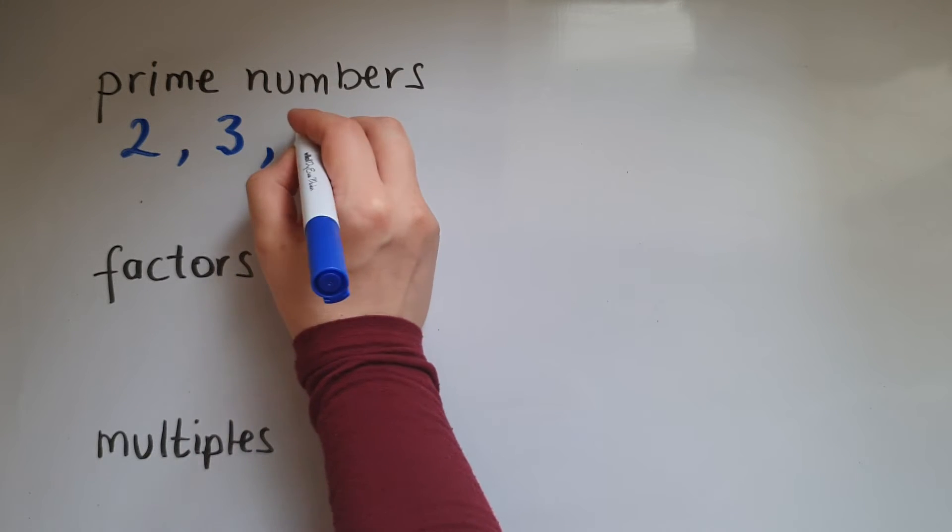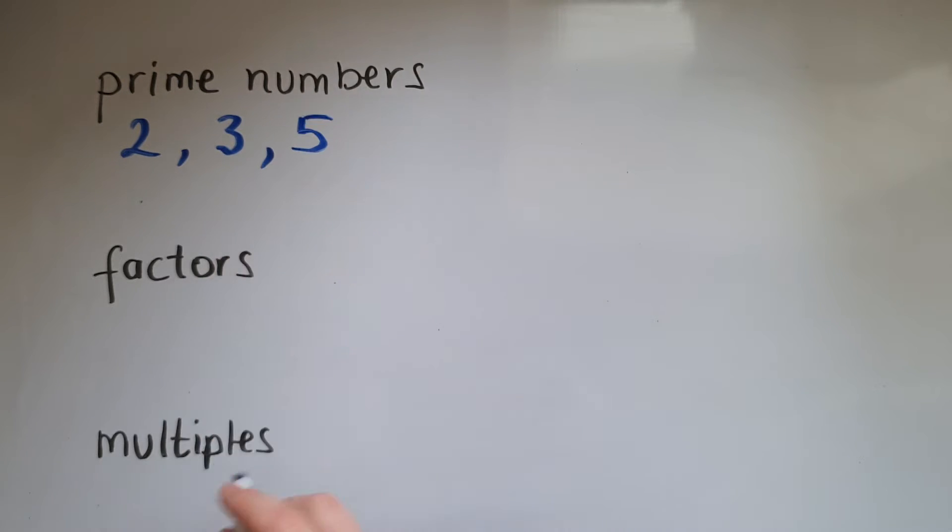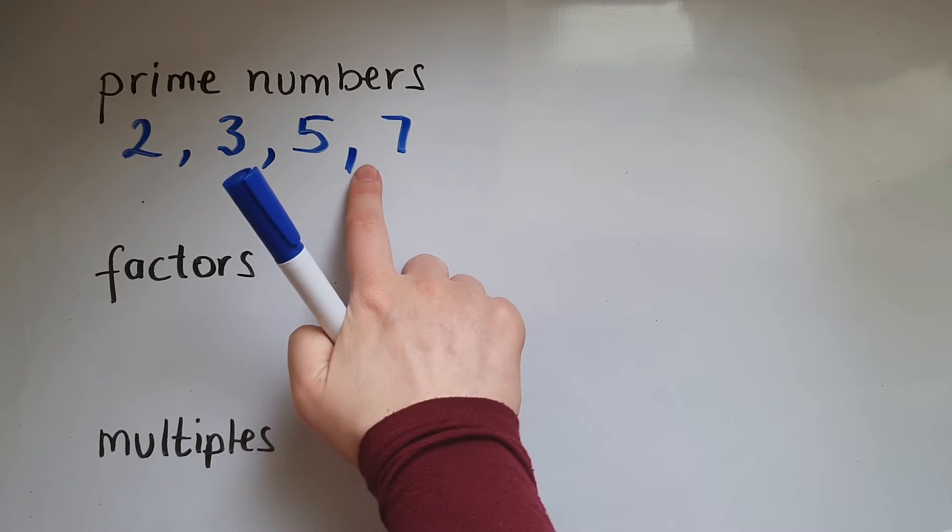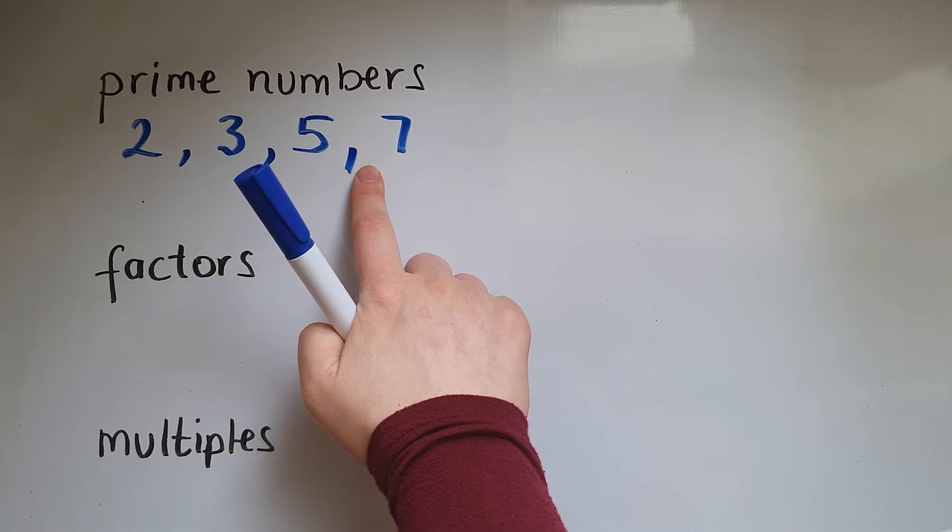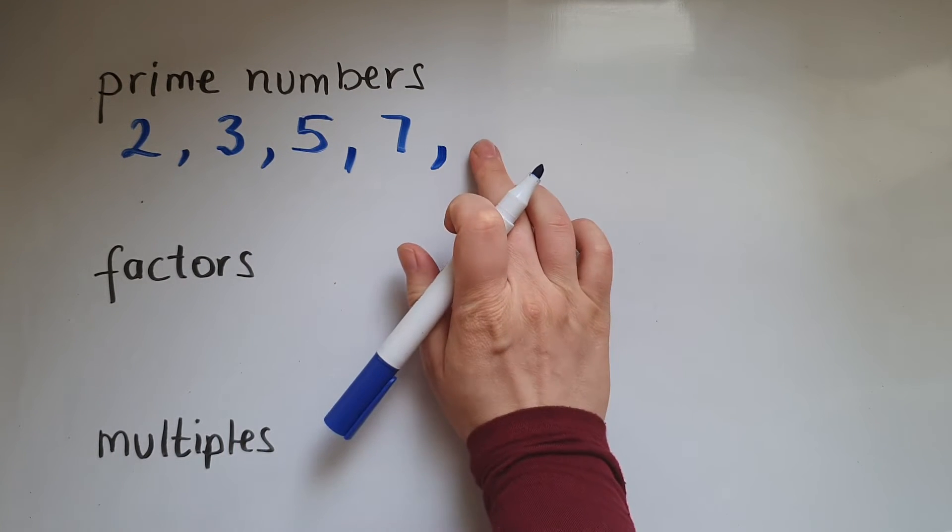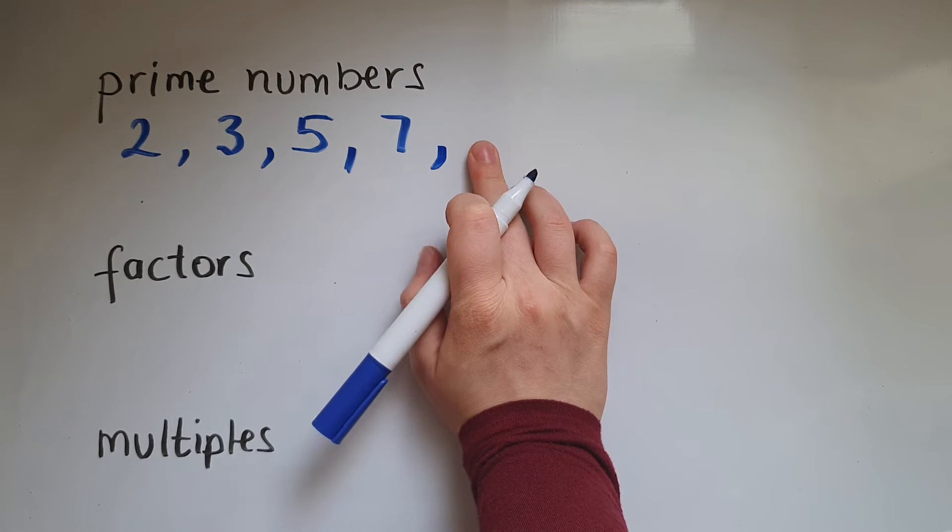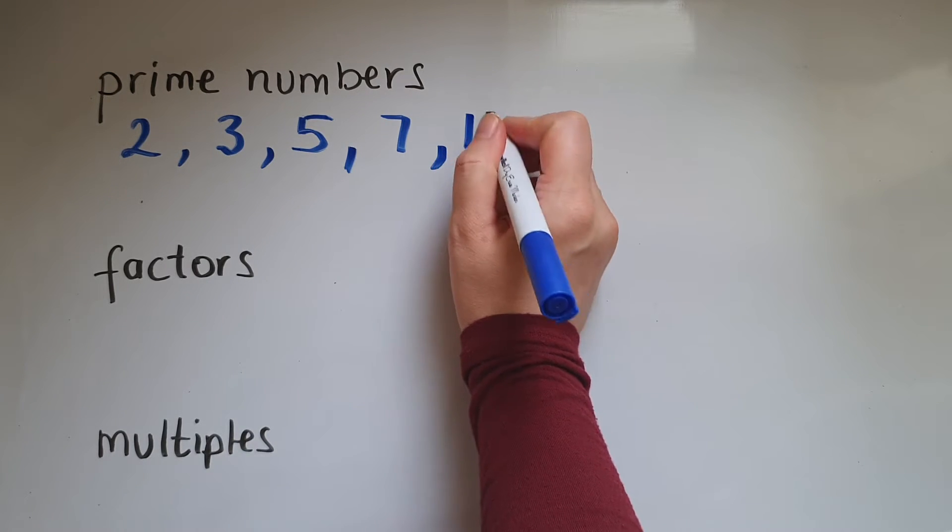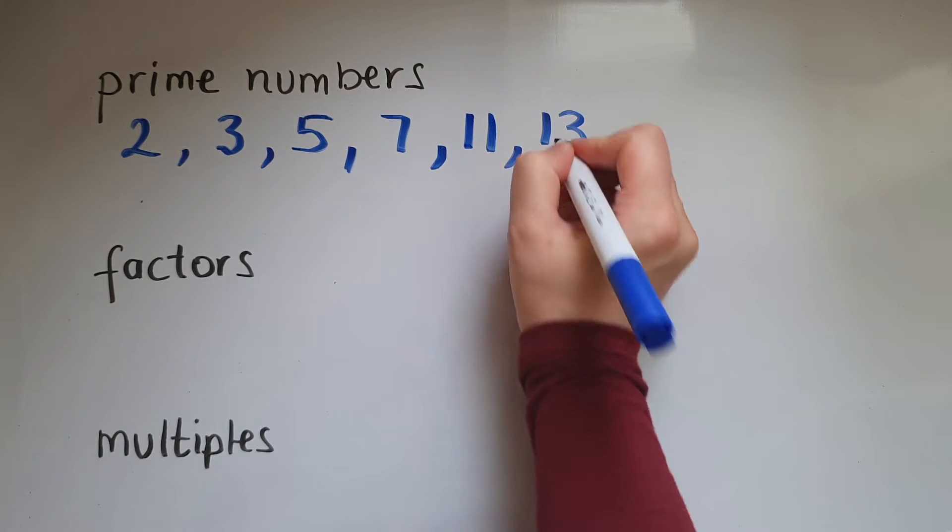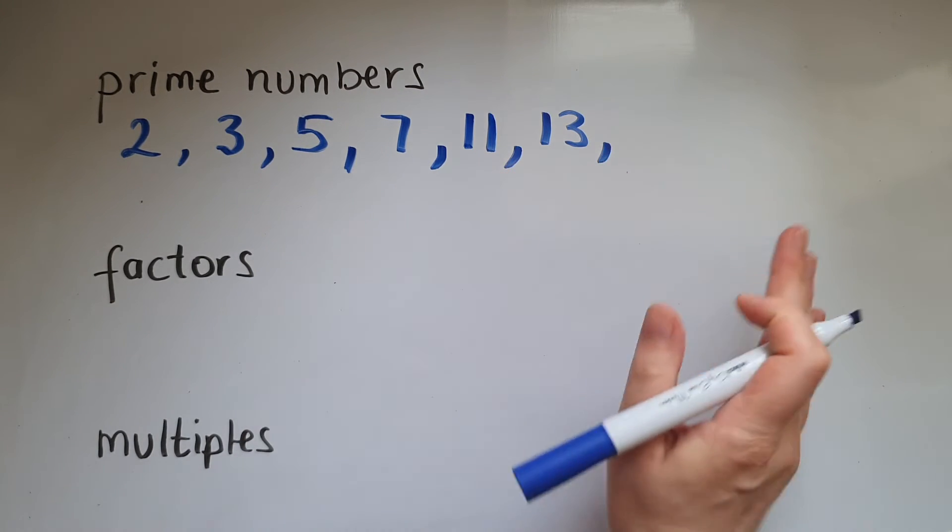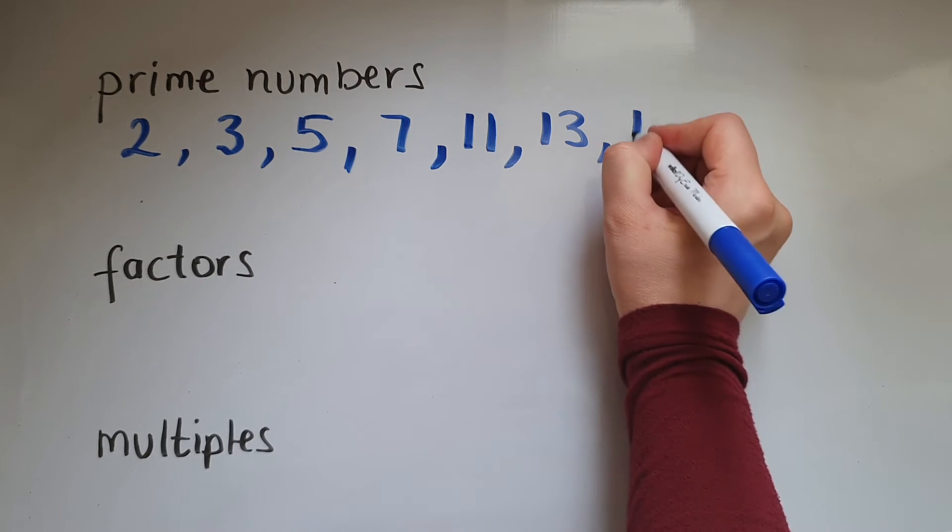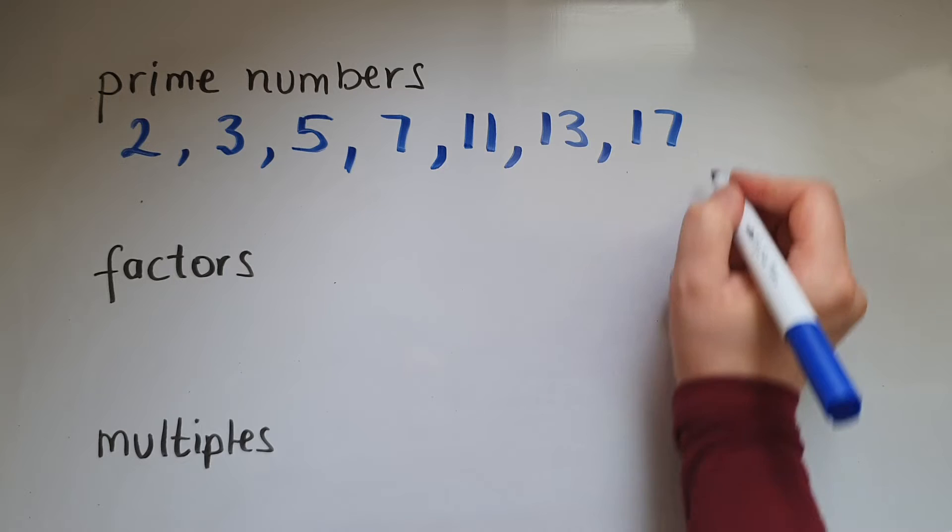Five, seven. Notice how six is not prime because you can have two times three. Eight is not, nine is not, ten is not, eleven is, twelve is not, thirteen is a prime number, fourteen is not, fifteen is not, sixteen is not, seventeen is a prime number.